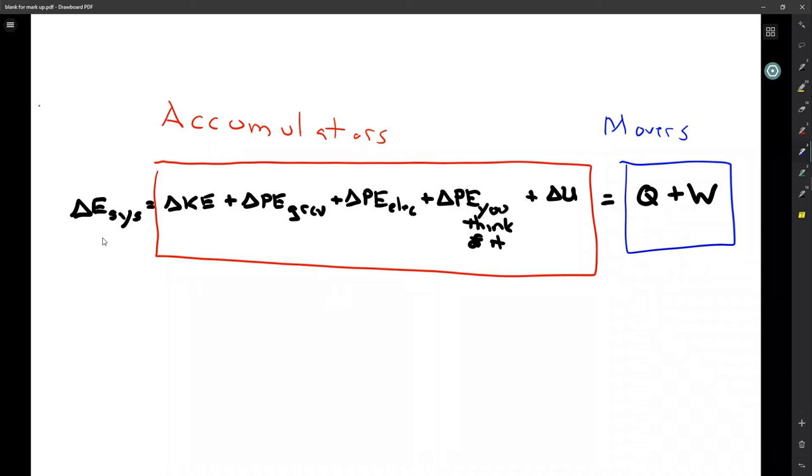Okay, so the last thing we have to think about are what I'll call tendencies. Tendencies, they indicate the extent of the movement. So for example, a tendency would be pressure.